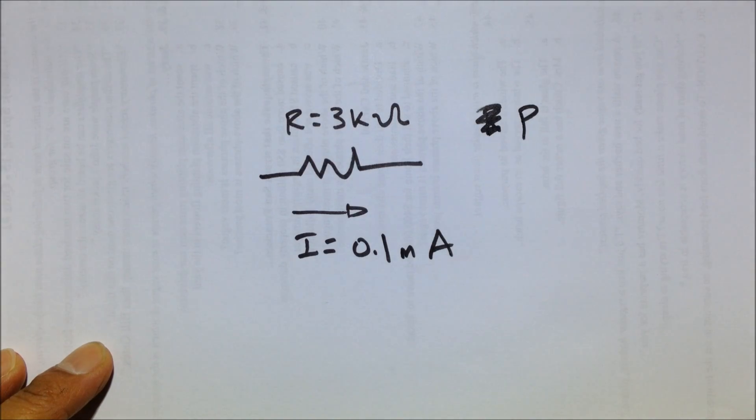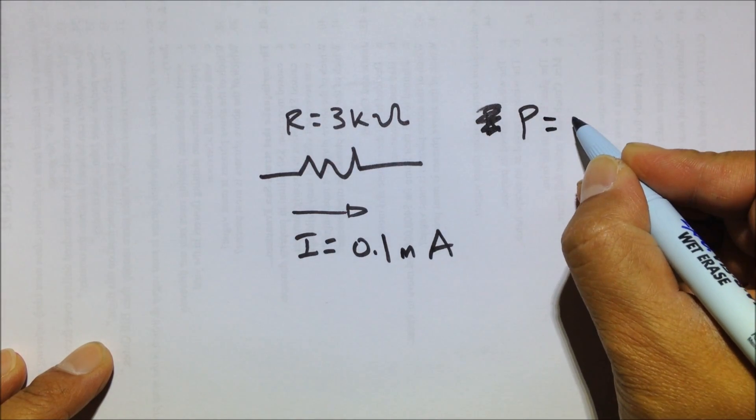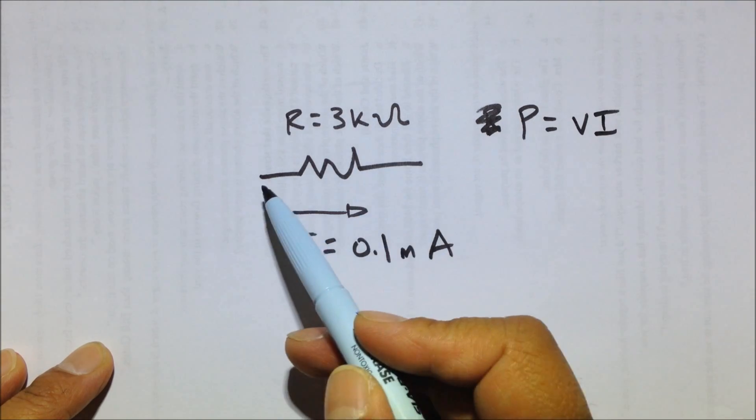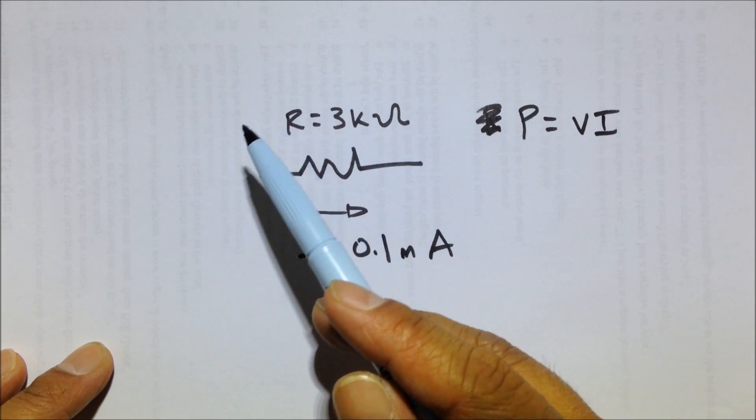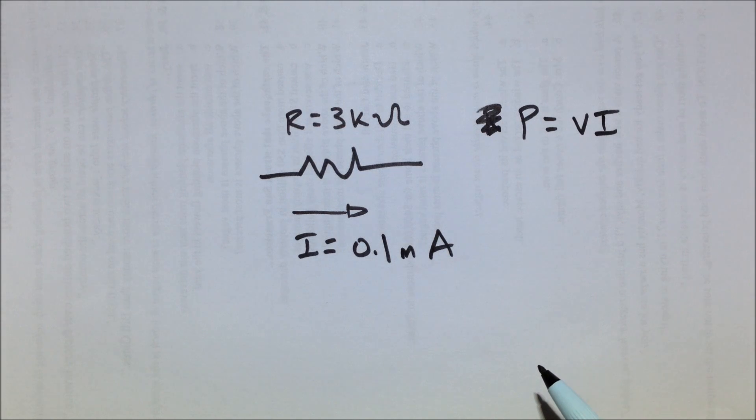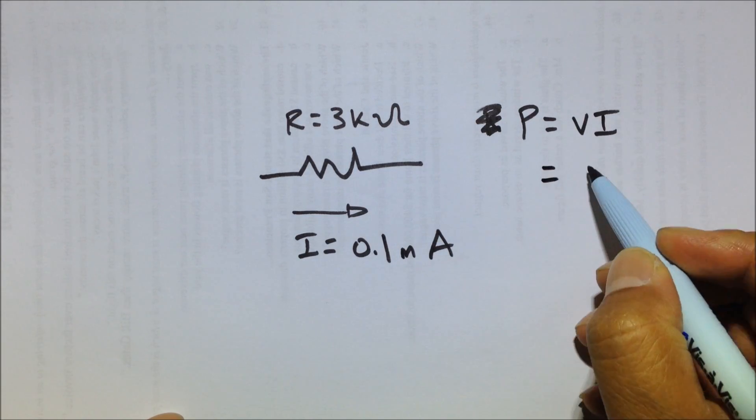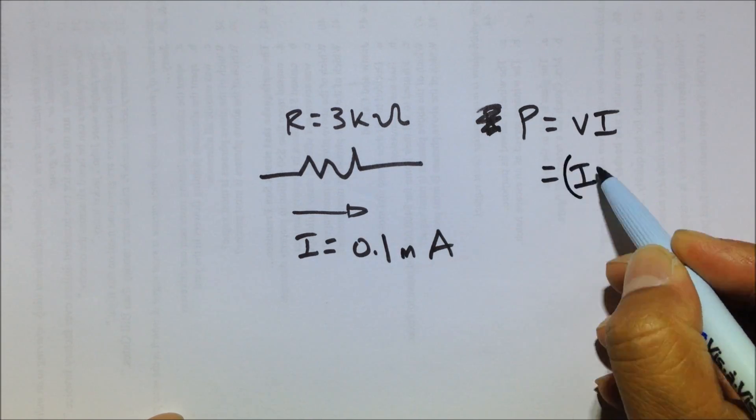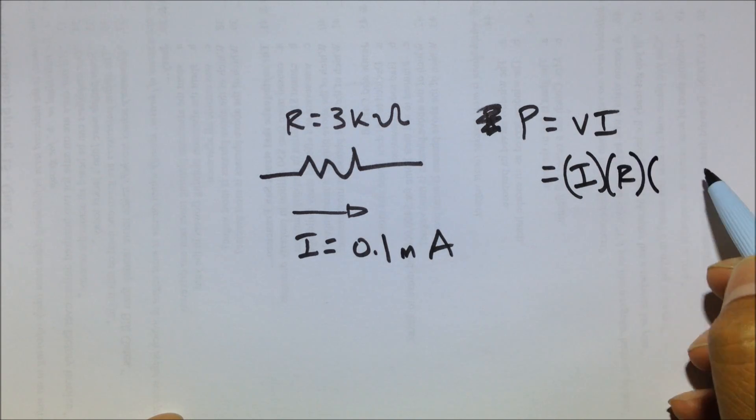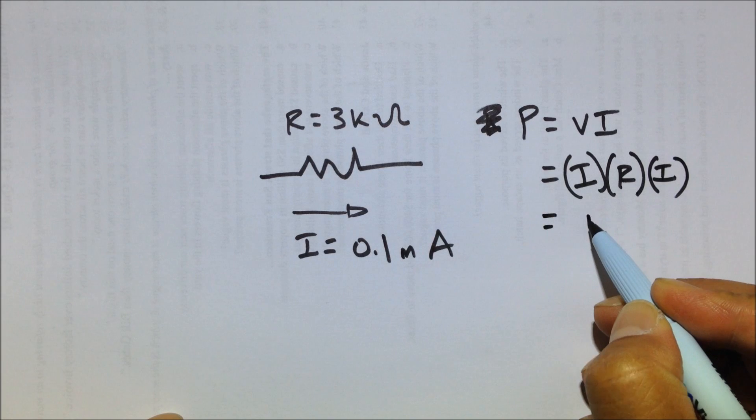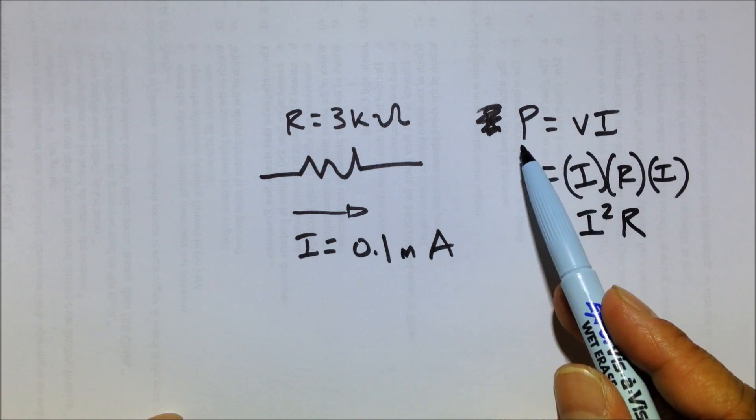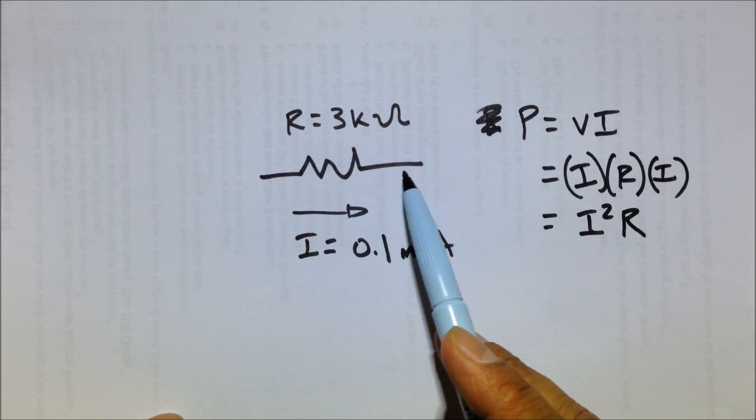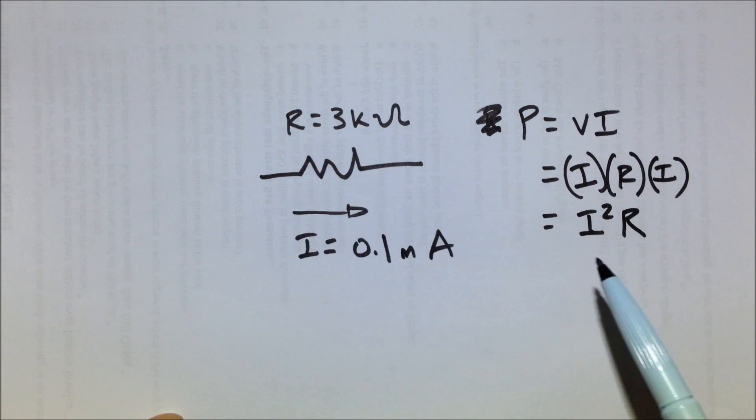So how do we do that? Again, we know that P equals voltage times current, the voltage across it times the current that goes through it. But as we notice, there's no voltage given, we only have R. Well, we know Ohm's Law, and we know that V equals IR. So replace V with I times R times I, and what you have is I squared R. And that's another popular form of the power equation, remembering that the power consumed by something is the current squared passing through it times its resistance.